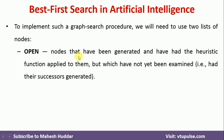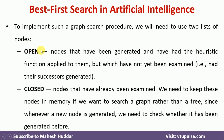One is open and another one is closed. The open data structure contains all those nodes which were generated but have not yet been examined. The closed data structure contains all those nodes which have already been examined. These are the two data structures which are very important when it comes to implementing Best First Search Algorithm in Artificial Intelligence.